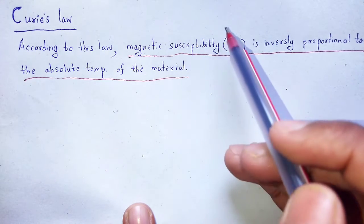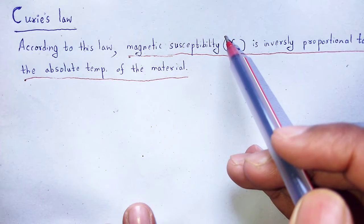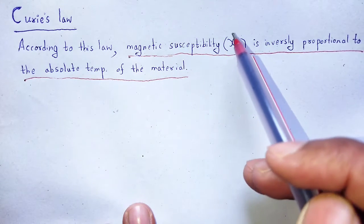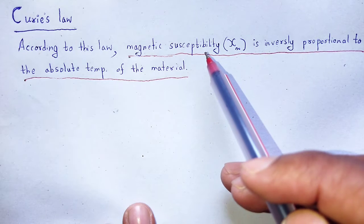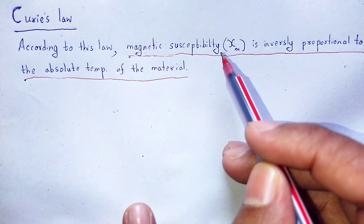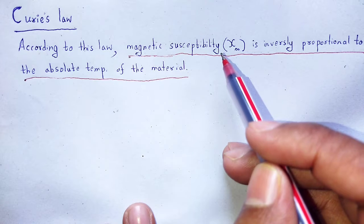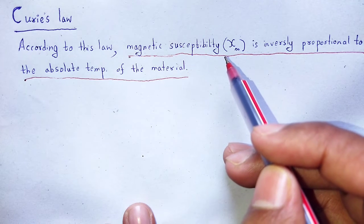Magnetic susceptibility — by using magnetic susceptibility, we can say that it is the easiness of a material to be magnetized.